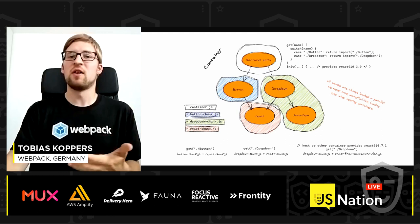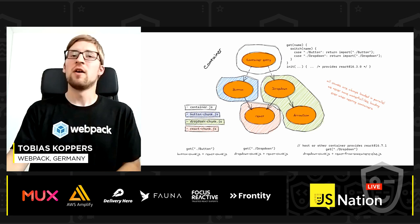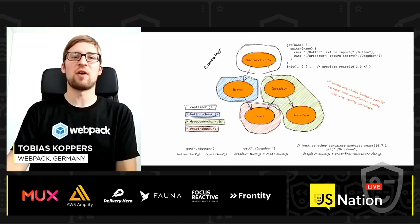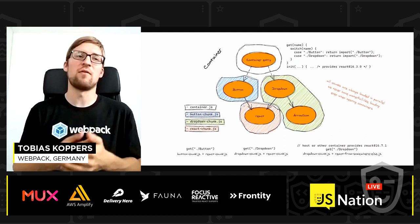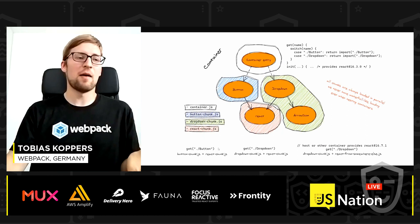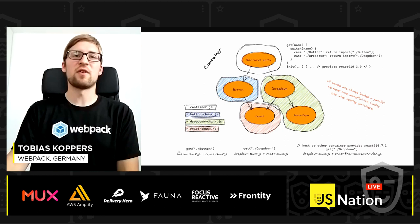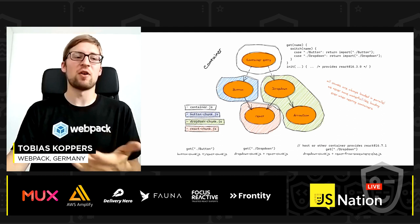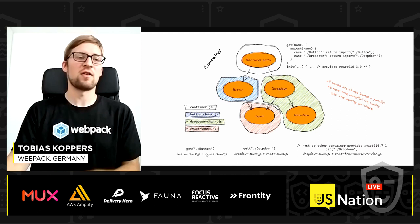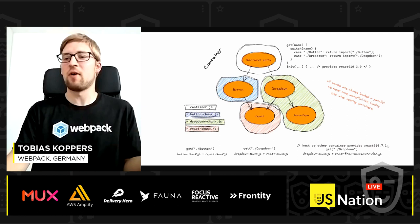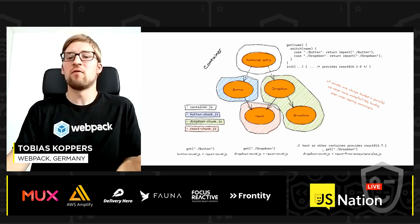Every shared module is also placed in a separate file, since it may or may not be loaded depending on whether a satisfactory version is already available at runtime. If you request the button component, the runtime loads the button chunk and shared modules required by it in parallel. If a React version of the same or higher version is already available at runtime, the dropdown only requires its own chunk — React is either loaded from elsewhere or not loaded at all.